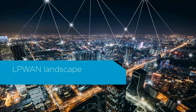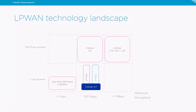Looking at the low-power wide-area network landscape: older 2G and 3G technologies have more than enough throughput but are not low power. The higher LTE categories also have high throughput but are not low power. Sub-1 GHz ISM band LPWANs like Sigfox and LoRa offer low-power operation but limited throughput and efficiency. Cellular IoT sits in between — what we see as the sweet spot between low power and useful throughput.